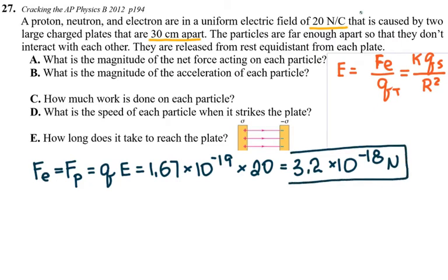That is the force for part A. There is no force acting on the neutron because the neutron has no charge. If you multiply both sides by Q to solve for the electric force, you get zero, because the neutron's charge is zero.